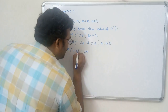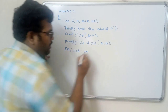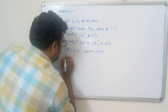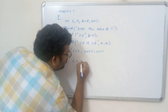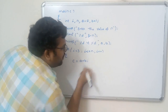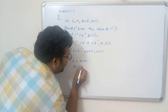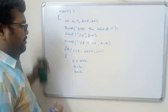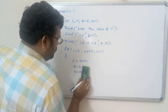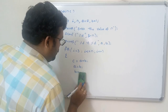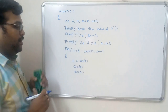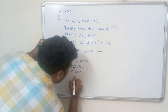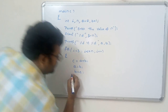Since the first two elements are already printed, the loop starts from the third element. The for loop condition is i less than or equal to n, with i incremented each iteration. Inside the loop, we calculate c equal to a plus b, then assign a equal to b, and b equal to c. Then we print the c value.